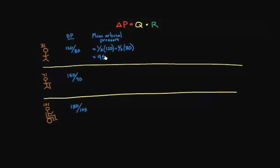And so that's how I came up with that 95 number, and that's also why it's not exactly 100, which is what you'd think an average would be between two numbers, but it's because we don't spend the exact same amount of time in systole as diastole. So then if I wanted to figure it out here, it would be one-third times 150 plus two-thirds times 90, and that works out to 110.